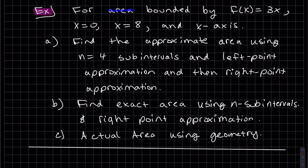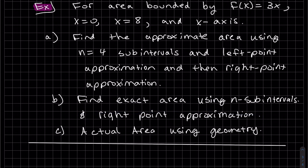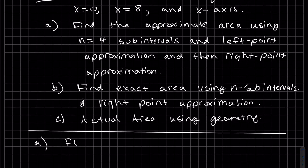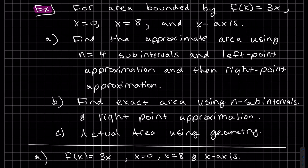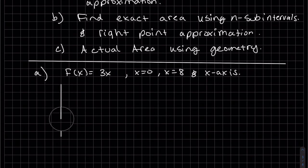Now let's work an example: find the area bounded by y = 3x, between x = 0 and x = 8 and the x-axis. Part a: approximate the area using four sub-intervals with left-point approximation, then right-point approximation. Part c: find the exact area using geometry. I prefer to draw it out and find each rectangle's area rather than use formulas for the approximation.